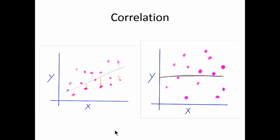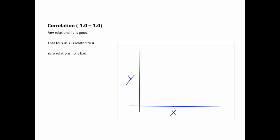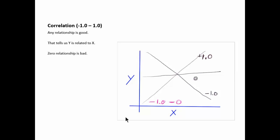In the case of no relationship at all, as X moves forward one step, we have no idea what's going to happen to Y. In summary, any relationship is good — it tells us that Y and X are related. Correlations range from negative one, where one step forward on X equals one step down on Y, to positive one, where one step forward on X equals one step up on Y. Zero means one step forward on X tells us nothing about what happens to Y.